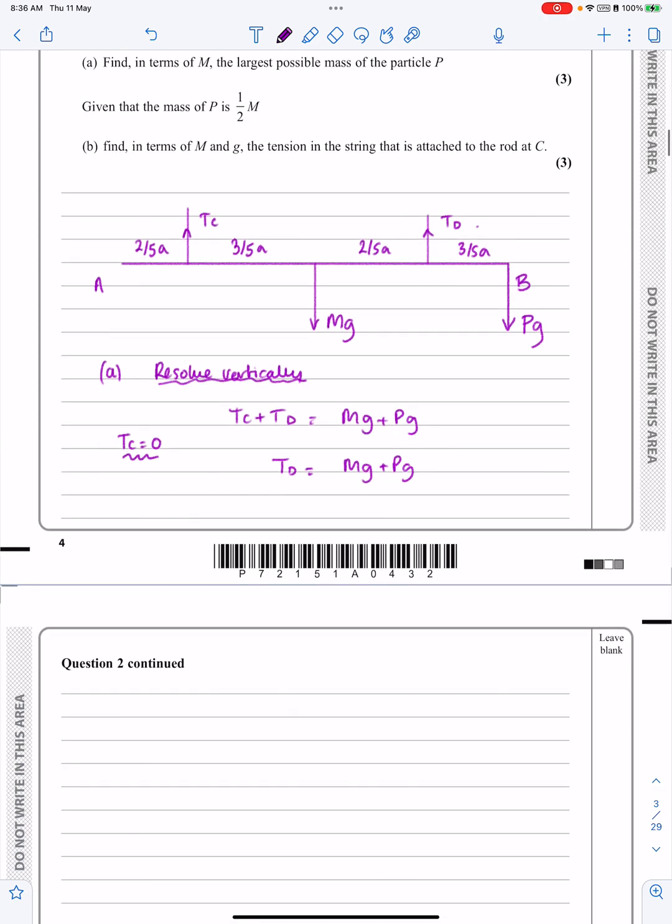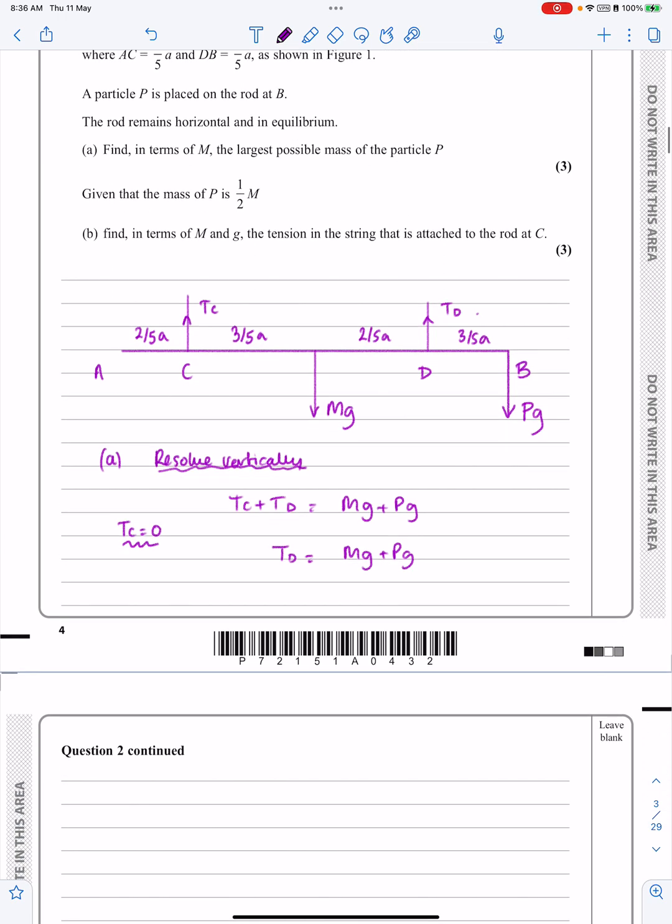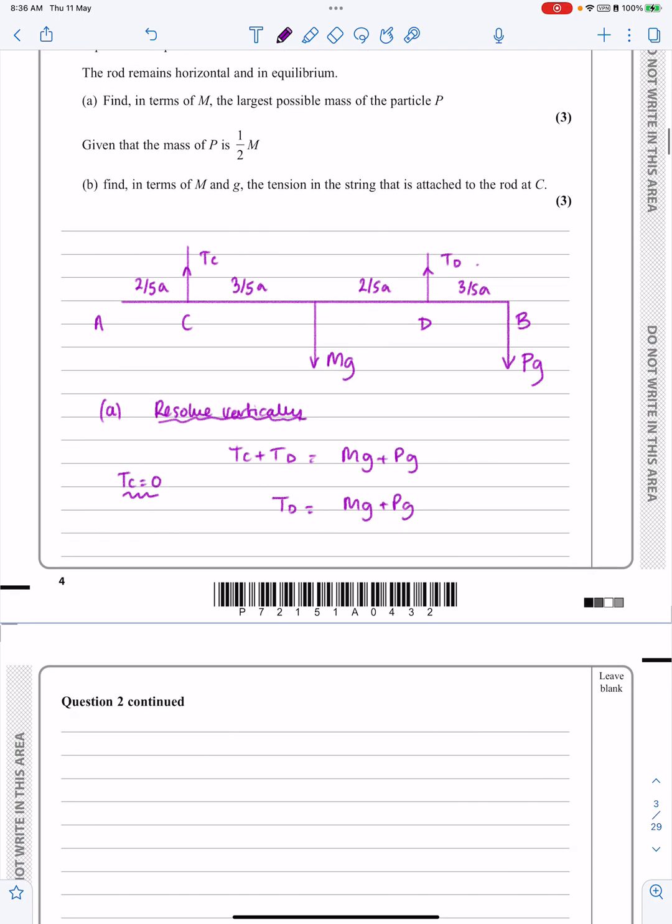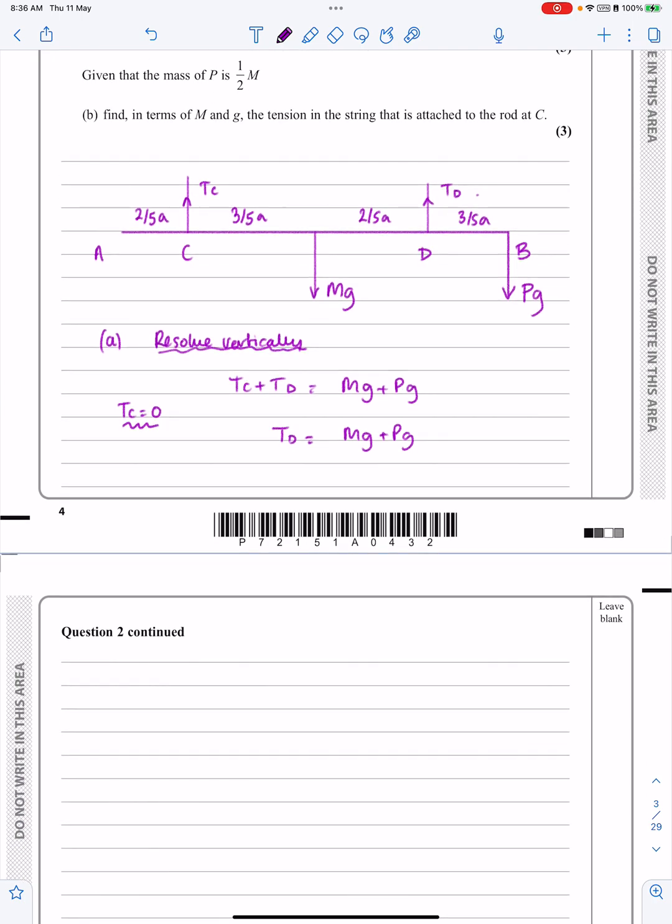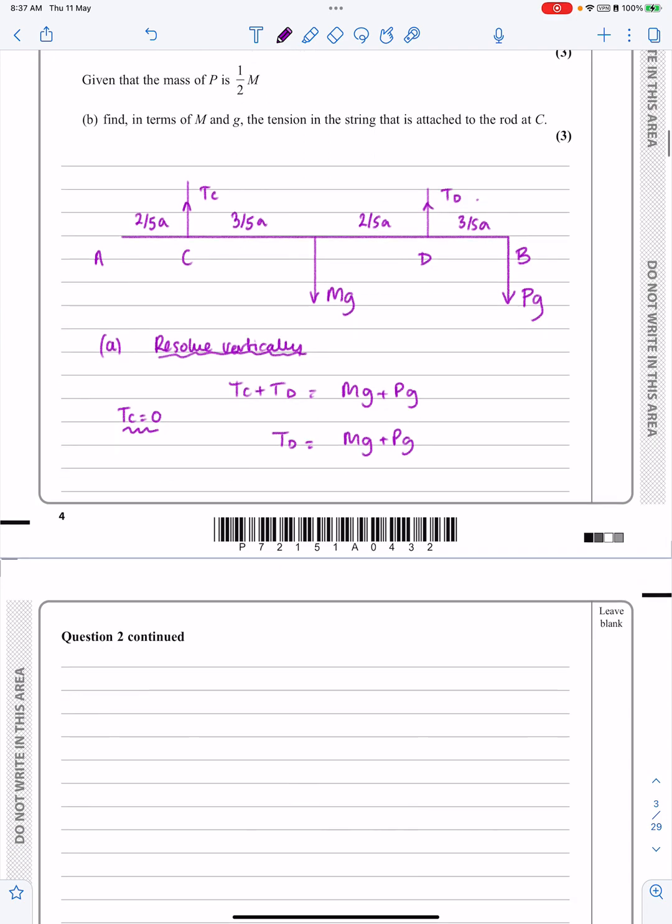So now, I want to take moments, I can take moments about anywhere I want. I can take it about, well let's put my other letters on, sorry, that's C there and that's D there when we're doing it. So I can take moments about A, about C, about D, about B, I can take moments about M if I want to. But what I want to do when I'm taking moments, ideally, is to make sure that the variables I've got are as limited as possible. So I'm going to decide to take moments about C.